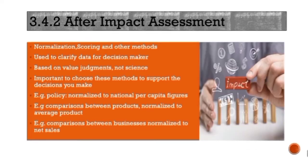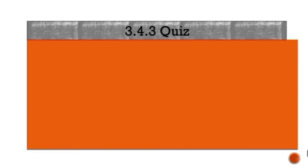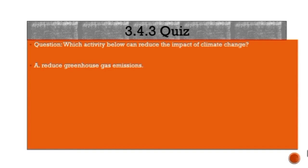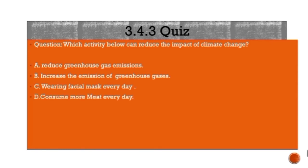Quiz. Question: Which activity below can reduce the impact of climate change? A. Reduce greenhouse gas emissions. B. Increase the emission of greenhouse gases. C. Wearing facial mask every day. D. Consume more meat every day. I will announce the answer after counting to 10. 1, 2, 3, 4, 5, 6, 7, 8, 9, 10. The answer is A. Did you get it right? For those who get the right answer, congratulations.